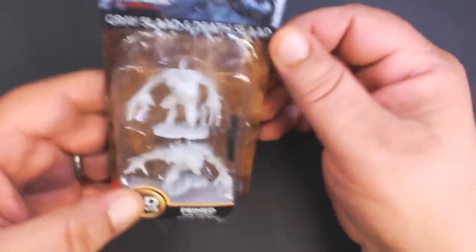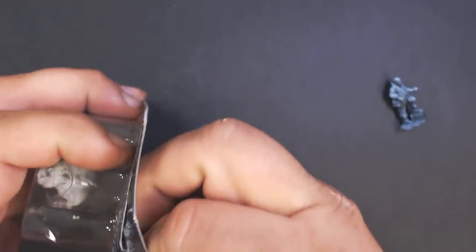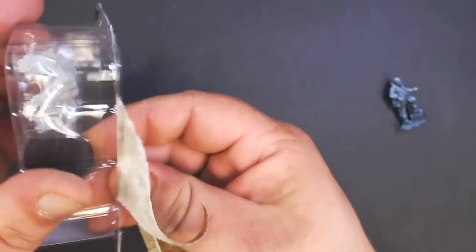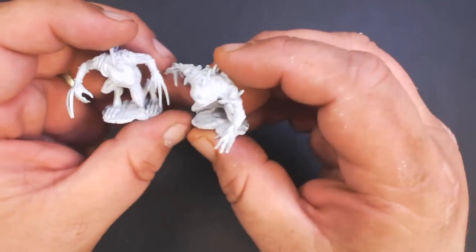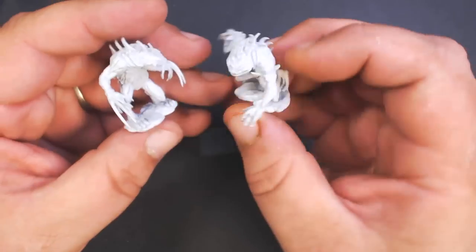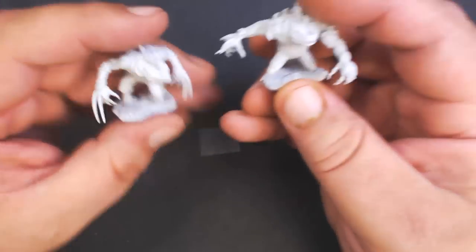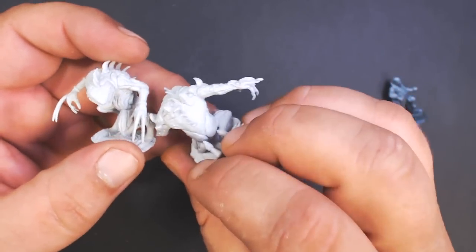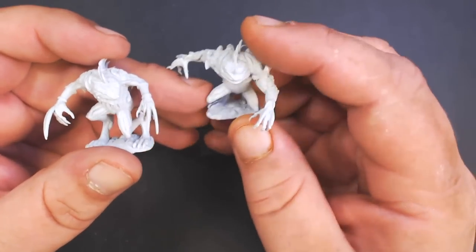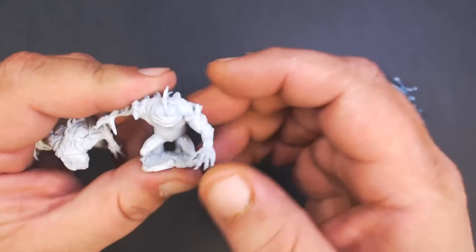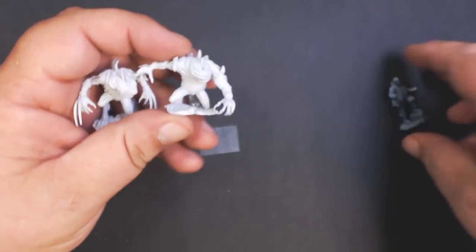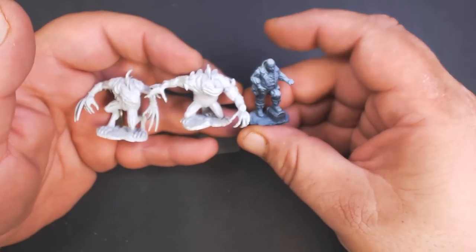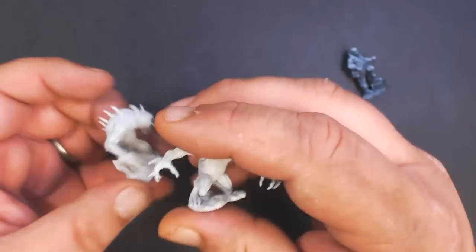This is one I've been very excited about—we've got the gray and death sloths. I'm not sure which is which, I'd have to look at the Monster Manual probably, but this one looks a little meaner so he might be the death sloth. Very cool, very spiky. I really like the kind of grin this one has. Scale-wise, about medium sized. Awesome, look forward to painting these.